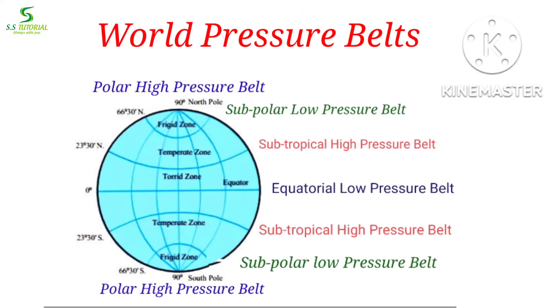In our world there are total 7 pressure belts. They are the equatorial low pressure belt, 2 subtropical high pressure belts, 2 subpolar low pressure belts, and 2 polar high pressure belts.